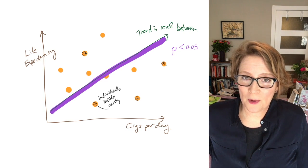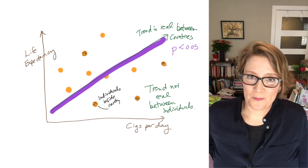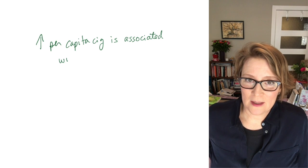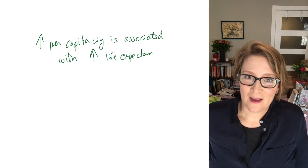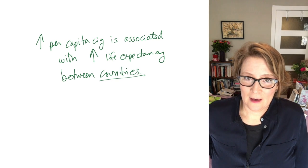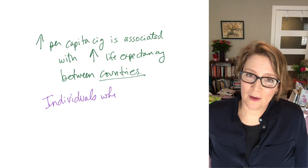If you want to interpret that data at the individual level, that is the ecological fallacy. So we can say from this data that the higher per capita cigarette consumption is associated with higher life expectancy. What we cannot say is that individuals who smoke more have longer life expectancies.